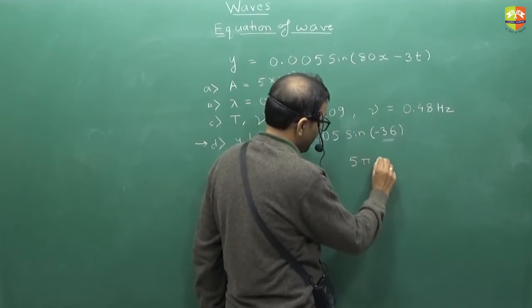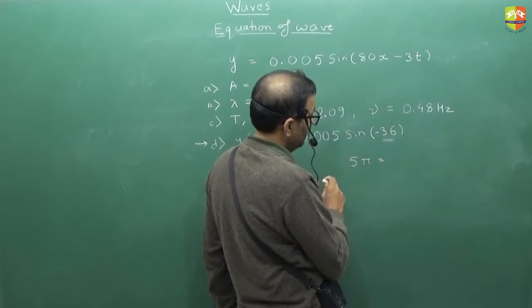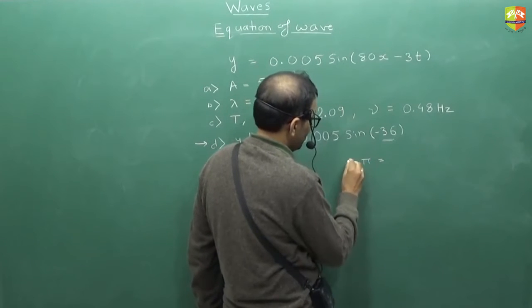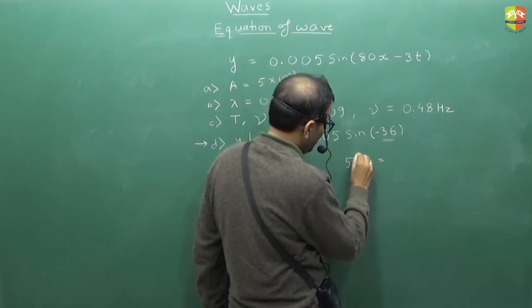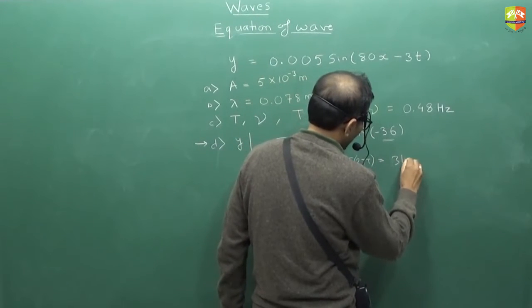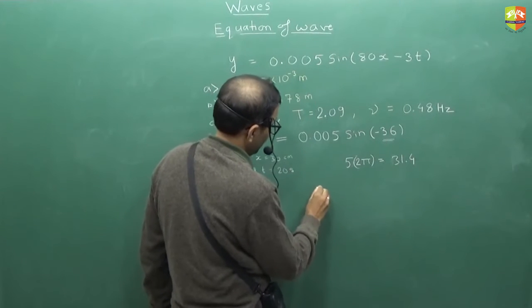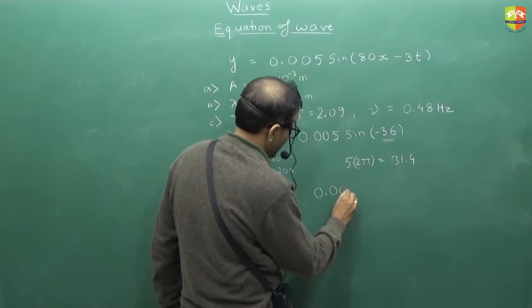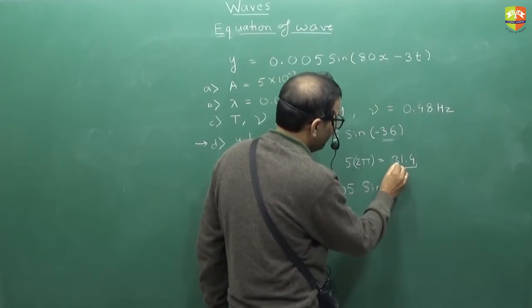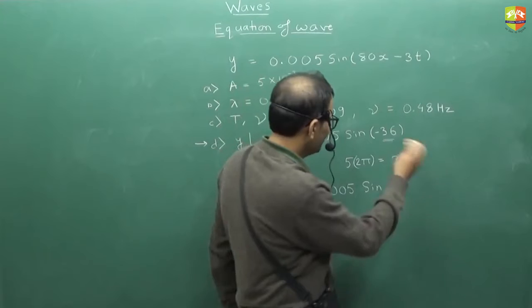5 times 2 pi. So that is 10 pi, which is 31.4. So you can go further, you can go to 12 and then subtract. So you can add 31.4 without affecting its value. Yes or no? Right? So let's add it.